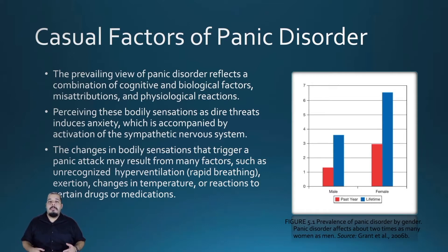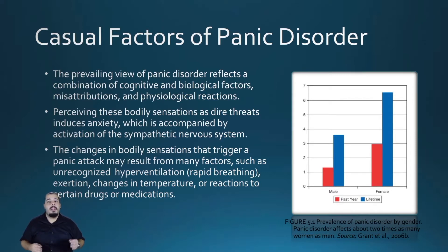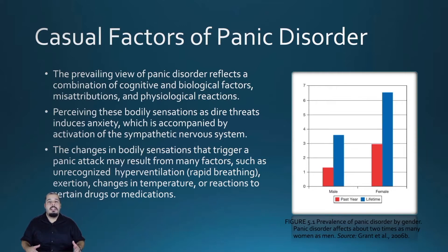Panic disorder results from both cognitive and biological factors, leading to misattributions of physiological reactions. The sympathetic nervous system activates the body during a panic attack, telling the adrenal glands to secrete stress hormones — epinephrine and norepinephrine — into the bloodstream. These hormones intensify physical sensations such as increased heart rate and breathing. When a person believes these are symptoms of an impending heart attack, this reinforces the bodily processes, worsens the perception of threat, and leads to a full-fledged panic attack.